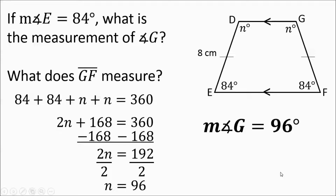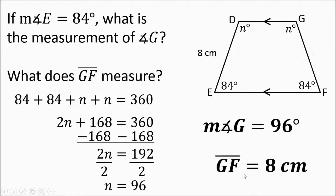Now we need to figure out what side GF measures. Side GF has the same single mark as side DE, and we were told DE is 8 centimeters. That also means GF is going to be 8 centimeters.